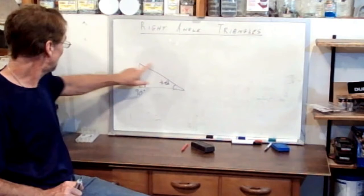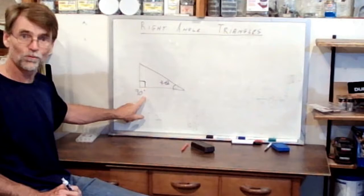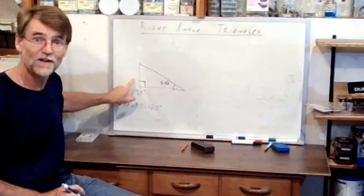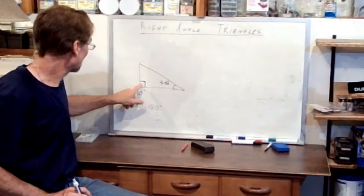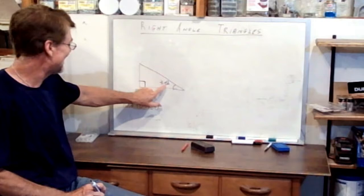Angle theta is what we want to calculate. The angle theta plus the other angle adds up to 90 degrees. So these two angles add up to 90 degrees, plus the right angle is 90 degrees — 90 plus 90 equals 180 degrees. So the inside angles of a right angle triangle sum to 180 degrees, which may be useful for solving numbers down the road.